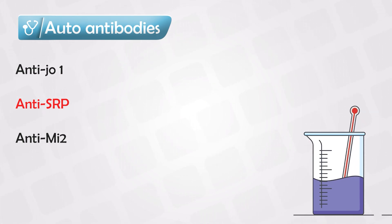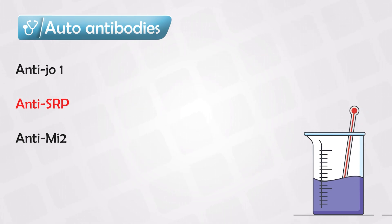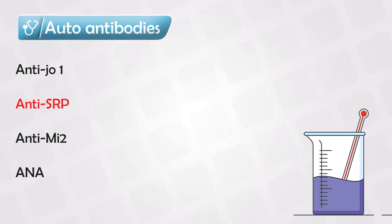We have some other antibodies that are less specific, and we see them with most autoimmune disorders. These include, of course, ANA or the anti-nuclear antibodies.